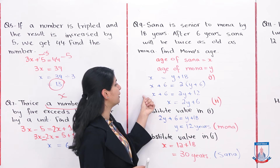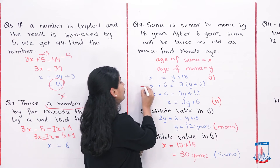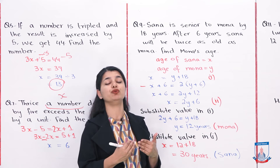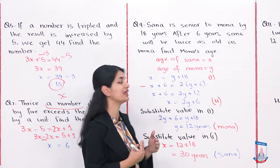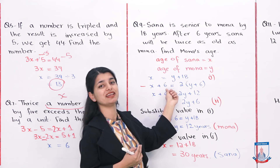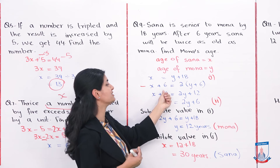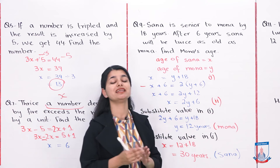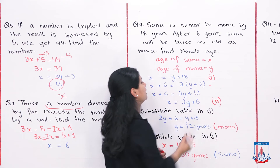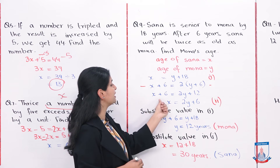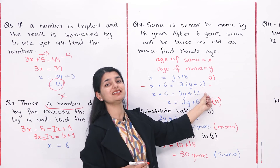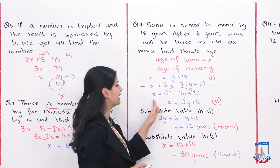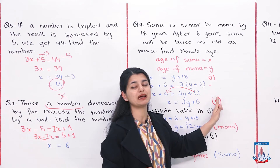The second condition is that after 6 years, Sana's age will be double Mona's age. So x plus 6 equals 2 times y plus 6. Expanding the right side gives 2y plus 12. Subtracting 6 from both sides gives our second equation: x equals 2y plus 6.